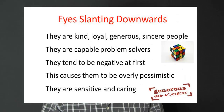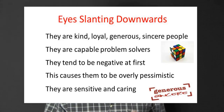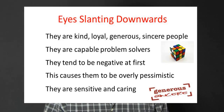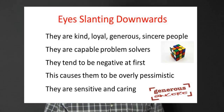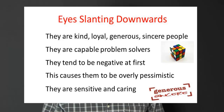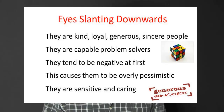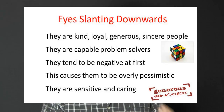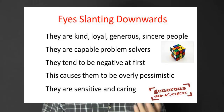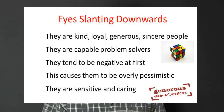Eyes slanting downwards: these people are kind, loyal, generous, and sincere. They are extremely capable of solving problems and actually have the ability to anticipate them in advance. They do tend to be negative and pessimistic simply because they see the dark side first. Remember to look at both eyes to see which eye is pointing more downwards — this will largely reveal whether the issue at hand is professional or personal. Basically, you are looking at a sensitive and caring person.